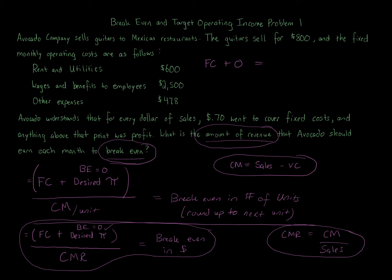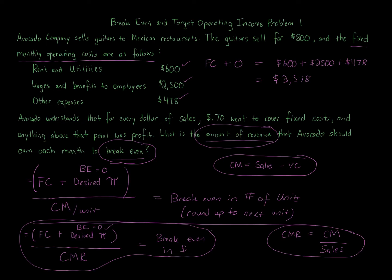Reading the problem, the guitars sell for $800 — that's the sales price — and our fixed monthly operating costs are: $600 in rent and utilities, $2,500 in wages and benefits to employees, and $478 in other expenses. Adding those three: $600 + $2,500 + $478 equals $3,578. We add zero for desired profit, giving us $3,578 to divide by the contribution margin ratio.